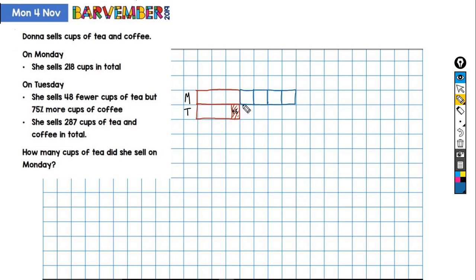And Tuesday, we sold the same amount of coffee plus 75%, which is three quarters. So that's three more of these. All right, this is the plus 75%.